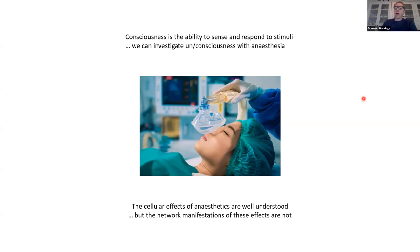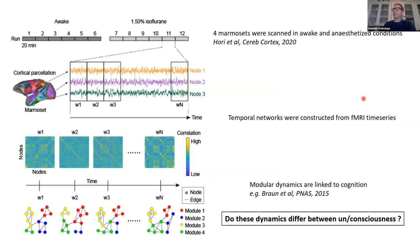The cellular effects of general anesthetics are quite well understood, and they have to be used in medical practice. But how those cellular effects play out at the large-scale level of brain networks is not so well understood. A great way to investigate those large-scale network effects in combination with anesthetics is through the use of neuroimaging, such as functional magnetic resonance imaging, or fMRI.